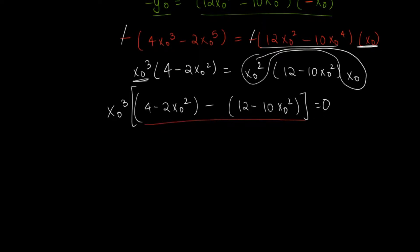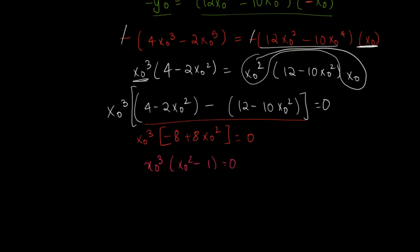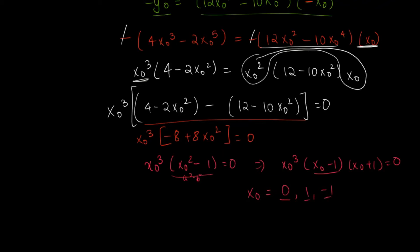Simplifying inside the brackets: (4 - 2x₀²) - (12 - 10x₀²) = -8 + 8x₀², so we get x₀³ · 8(x₀² - 1) = 0. This factors as x₀³(x₀ - 1)(x₀ + 1) = 0, using the difference of squares. Therefore x₀ = 0, x₀ = 1, or x₀ = -1. These are the three x-coordinates where the condition is satisfied.